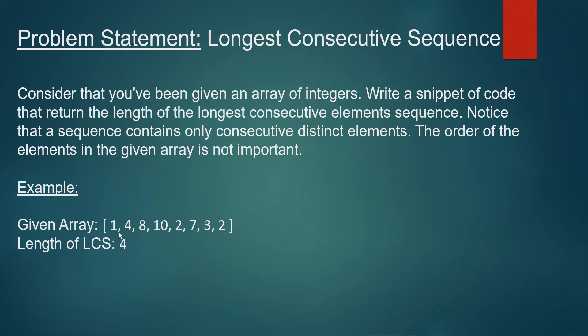We can see an example here with an array of eight elements, and we can clearly see that the longest consecutive sequence is one, two, three, four. So the length of the longest consecutive sequence we need to return for this array is four. We can also notice there is a value two which is duplicated in this array, and we will ignore that when calculating the length of the longest consecutive sequence.